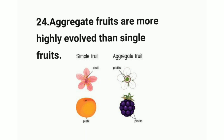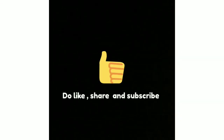In simple fruit, the fruit is derived from only one ovary. Hope you understood the Hutchinson classification. If you found this video helpful, please drop your views in the comment section, like, share, and subscribe to the channel.